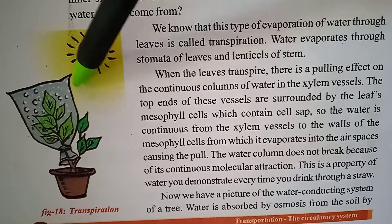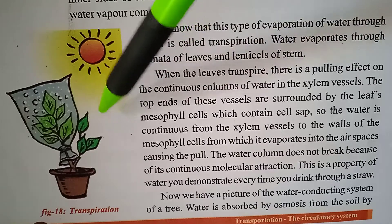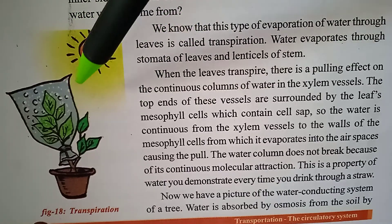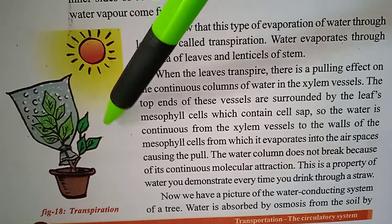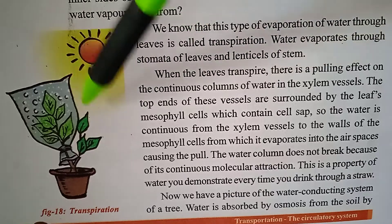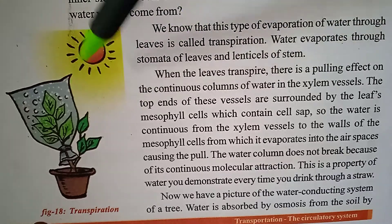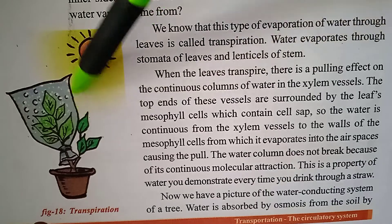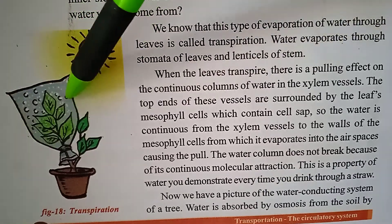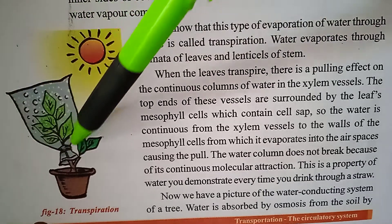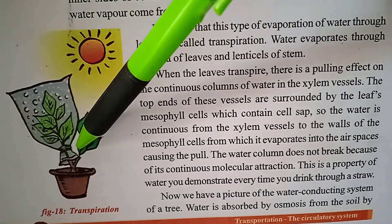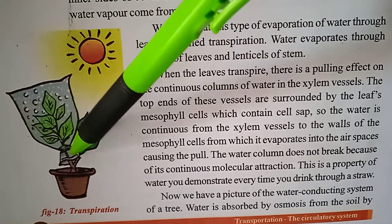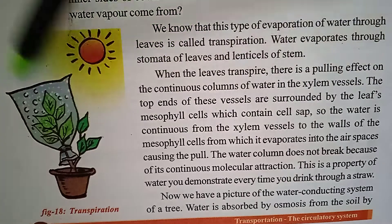And today we are discussing this concept. So, first we need to take a potted plant which is well exposed to sunlight. And we need to take a polythene bag and also thread. And we need to tie this polythene bag by selecting a branch, with the help of a twine or thread. After this polythene bag is tied with the help of the thread, we need to keep the entire setup in the sunlight.